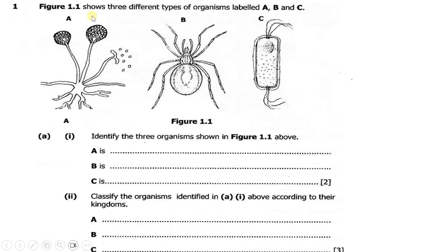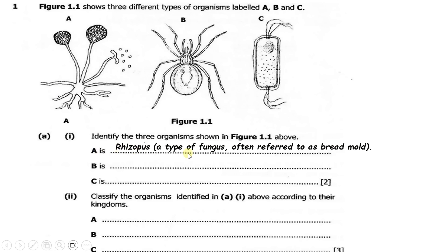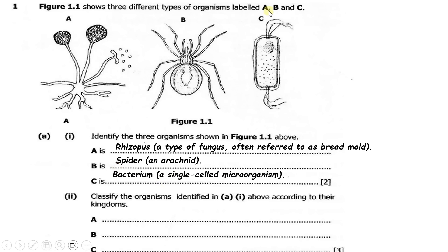So figure 1.1 shows three different types of organisms labeled A, B, and C. Part A, part 1: identify the three organisms shown in figure 1.1. So organism A here is a Rhizopus — you must understand that this one is a Rhizopus, a type of fungus often referred to as bread mould. Then organism B here, as you know it, is a spider, also called an arachnid. Then organism C here is called a bacterium, also a single-celled organism or microorganism.